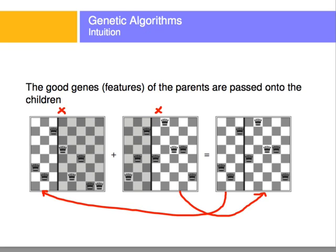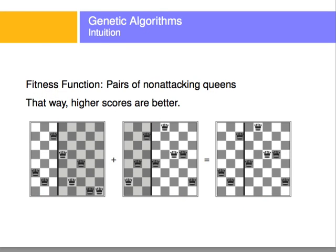Let's look at the intuitions a little more in depth. What we need to know is what the fitness function is going to be. In the fitness function, more is better — a higher number is a better number. The fitness function is going to be the number of pairs of non-attacking queens. If there are 28 non-attacking pairs, that is a full success. If there are zero non-attacking pairs, it means every queen is attacking each other, which is a bad board. So bigger numbers of pairs of non-attacking queens are better.